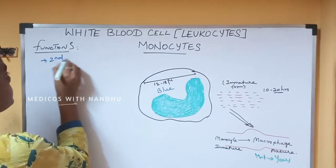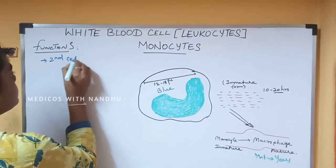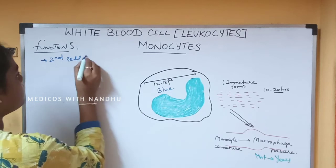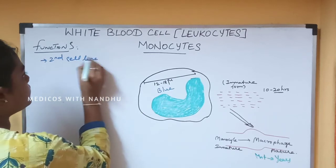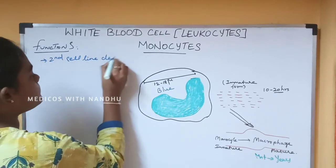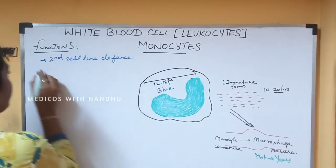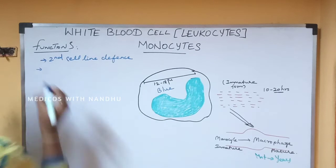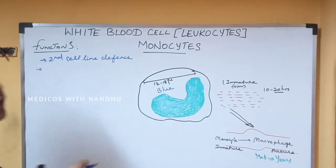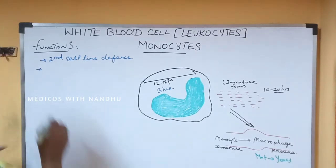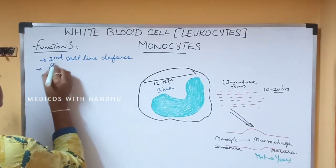The monocyte also has phagocytic action — similar to neutrophils, it can engulf and destroy pathogens through phagocytosis.